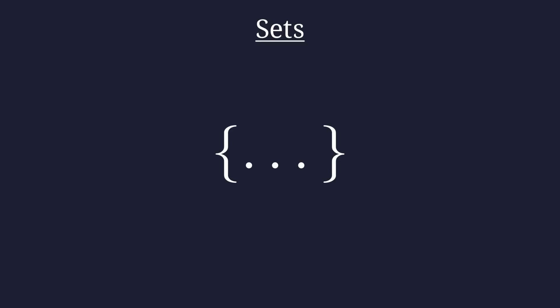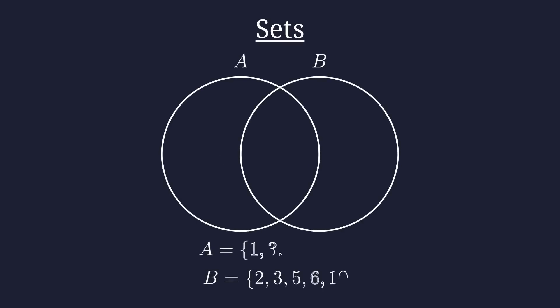When representing small sets, we can use a pair of braces or curly brackets around all of the elements in the set. Using a Venn diagram, we can represent the elements of multiple different sets.